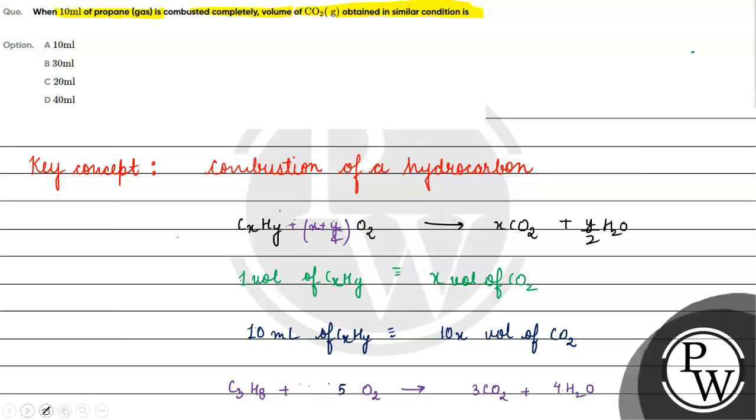Now let's see here, we have 1 volume of C3H8 react with 5 volume of oxygen, and we have 3 volumes of carbon dioxide.